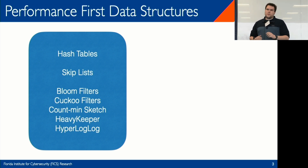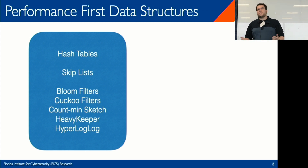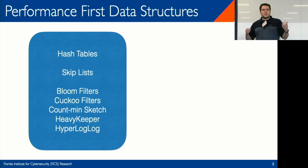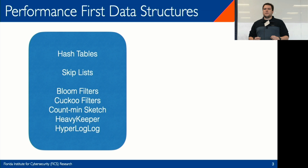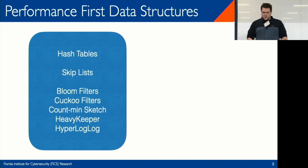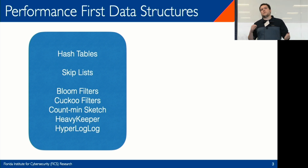Let's constrain ourselves to data structures that impose some notion of randomness on data representations. The familiar hash table randomly distributes data into buckets using a choice of hash function. Skip lists randomly partition data to optimize search. Bloom filters and similar structures compress data in a random way by using a collection of hash functions to hash a set of data to certain positions in small arrays. This randomness is used for efficiency gains, whether in space, time, or a combination.